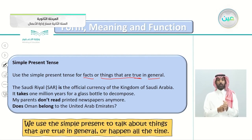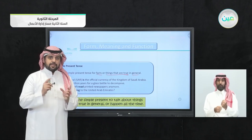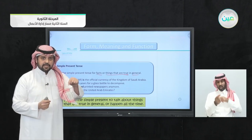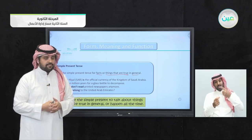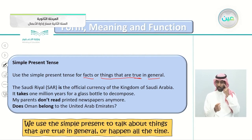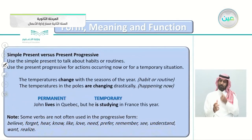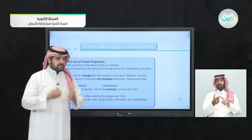We also use the simple present tense to talk about things that are happening all the time. For example, 'The earth circles the sun' — this happens all the time, every year. So the simple present is used for facts, things that are true in general, or things that are happening all the time. Now let's look at the simple present versus the present progressive.